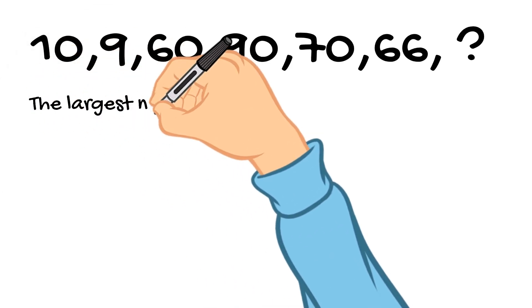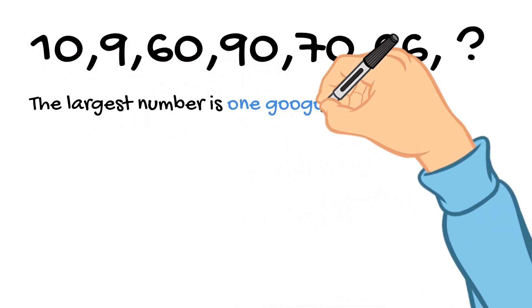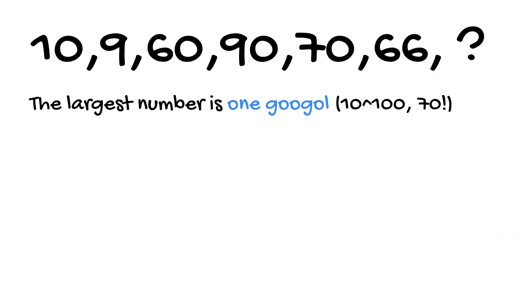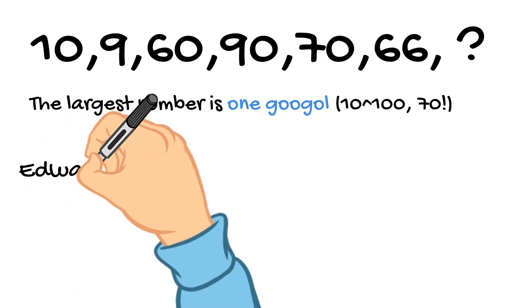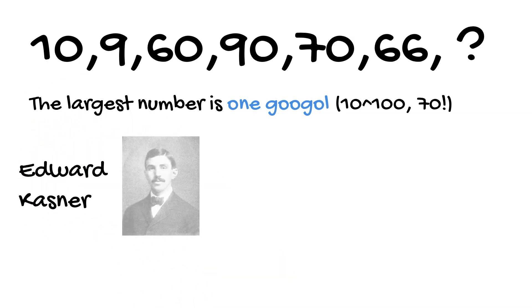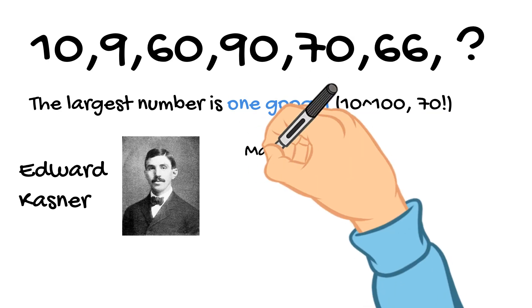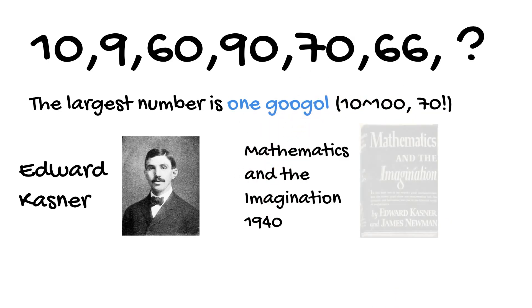The largest number is actually one googol, which is 10 to the power of 100 or 70 factorial. This term was introduced by the nephew of US mathematician Edward Kasner, and Kasner later popularized this concept in his book Mathematics and Imagination in 1940.